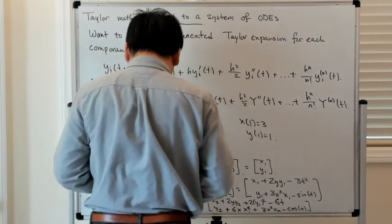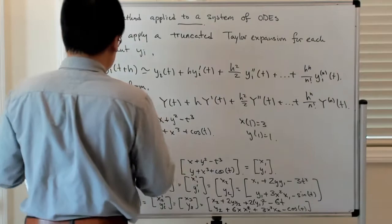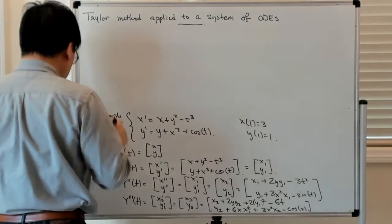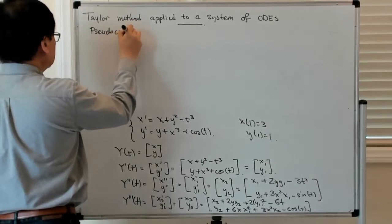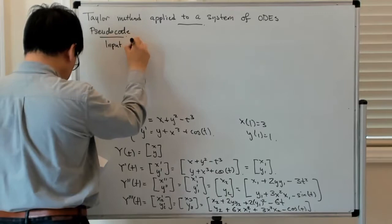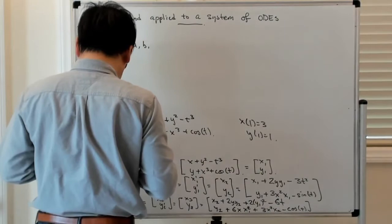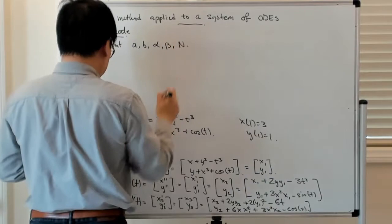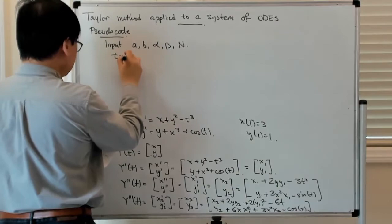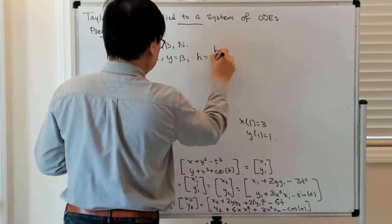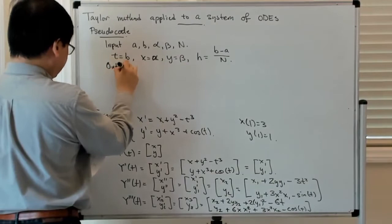Now I can put them all together to give pseudocode for this method. The input is the initial and final times A and B, the initial conditions alpha and beta, and the number of time steps N. Initialize: T = A, X = alpha, Y = beta, and time step h = (B − A)/N. The output will be T, X, and Y.